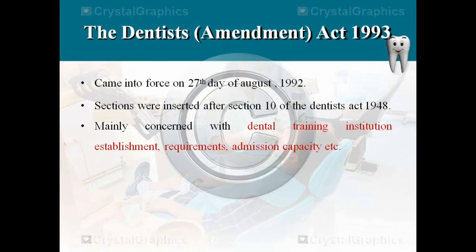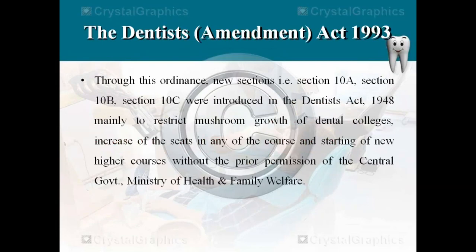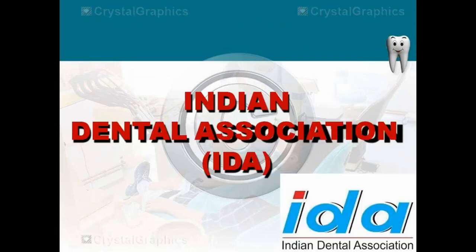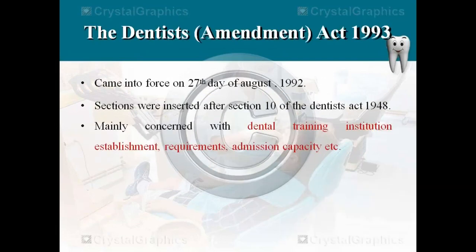There was an amendment in 1993 as well. To summarize, the Dentist Act of India has five chapters: chapter one - introduction, chapter two - Dental Council of India, chapter three - State Dental Council, chapter four - registration, and chapter five - miscellaneous. The next sessions will be on the Dental Council of India. Thank you.